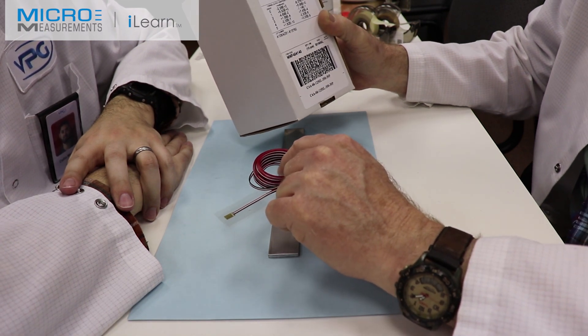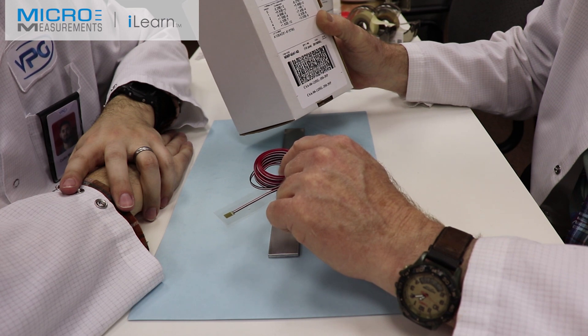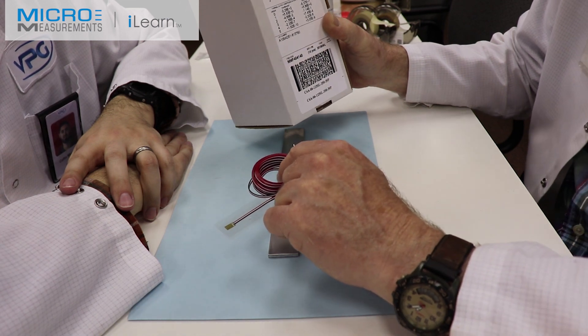Have you ever bonded a gauge with the Option P2, a CEA series gauge? No. Then this is going to be identical to that.